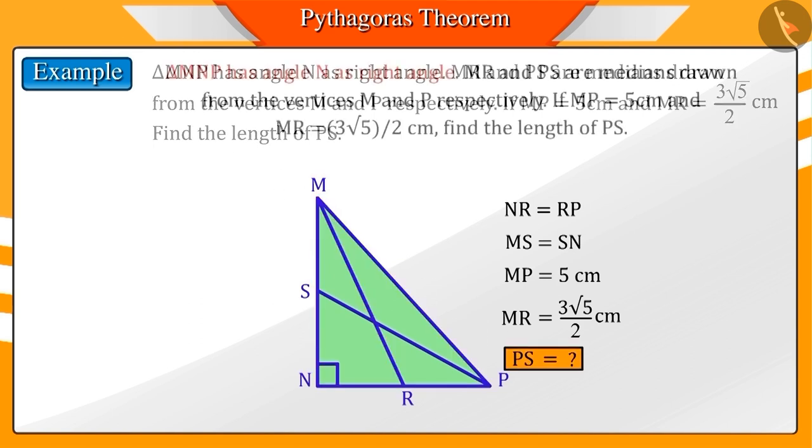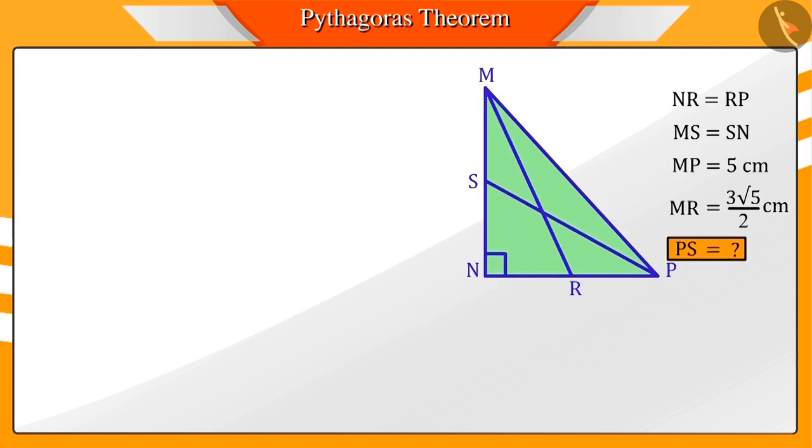So, from the Pythagoras theorem, we can say that square of MP will be equal to the square of MN plus square of NP, denoted by equation 1.